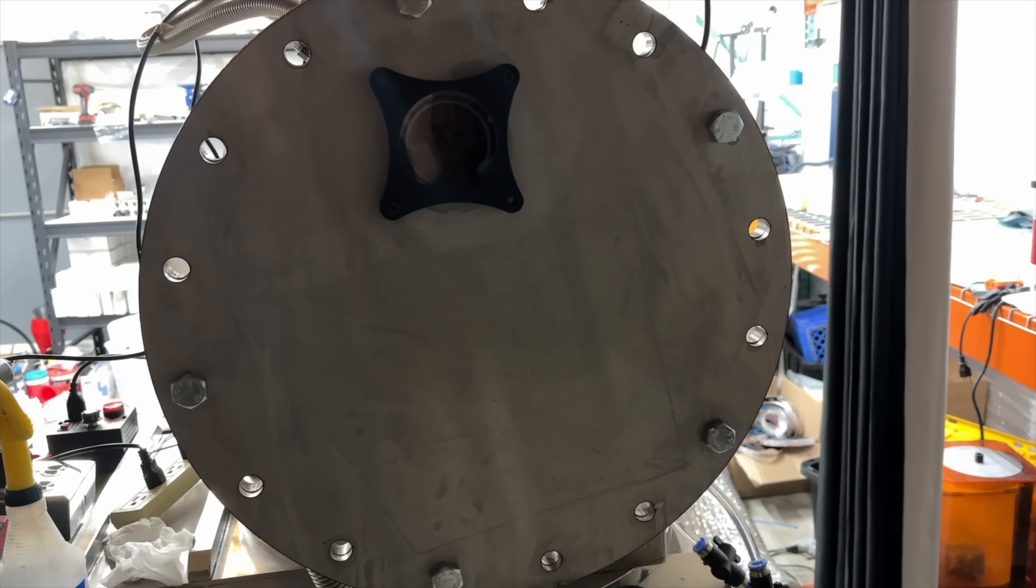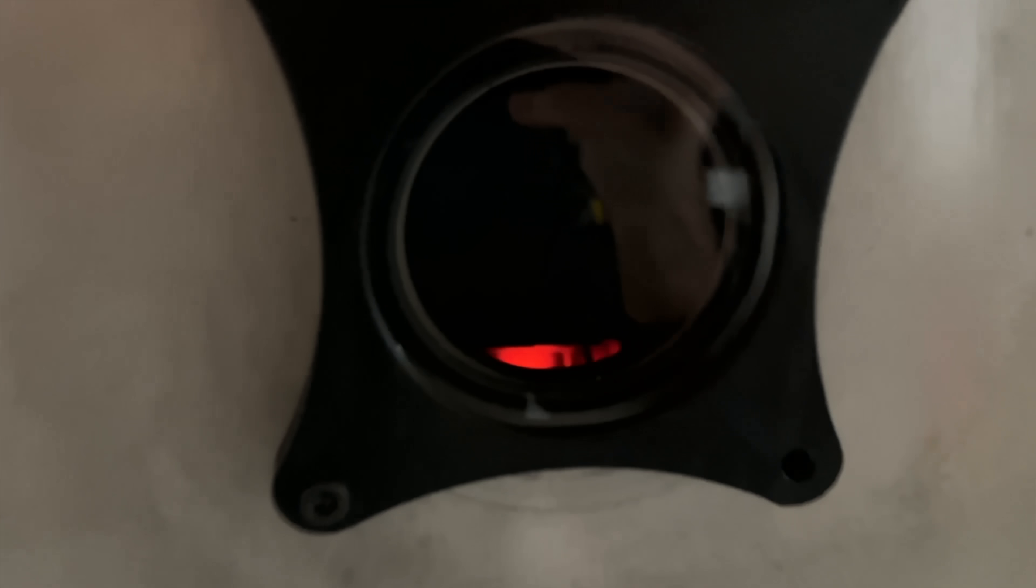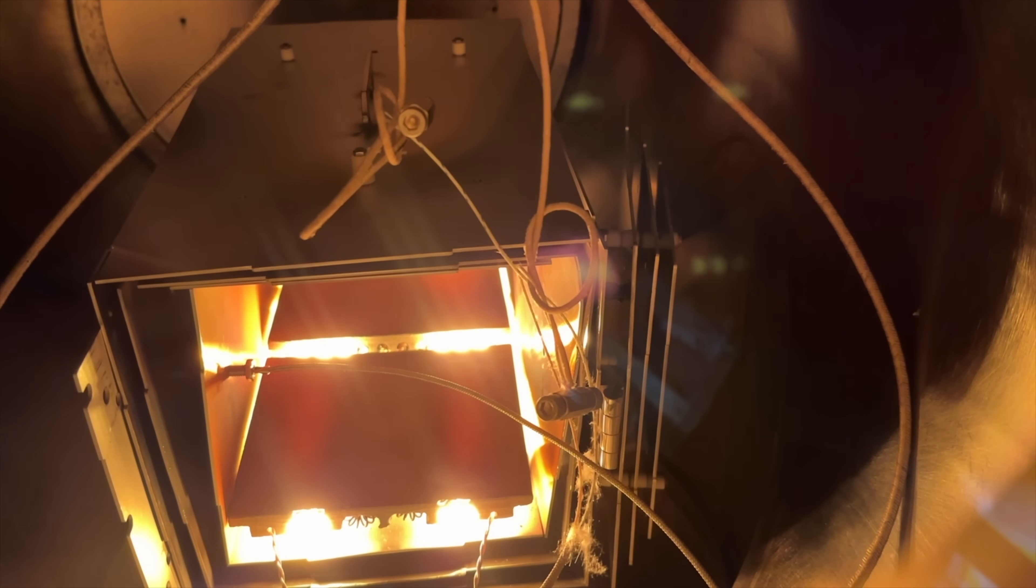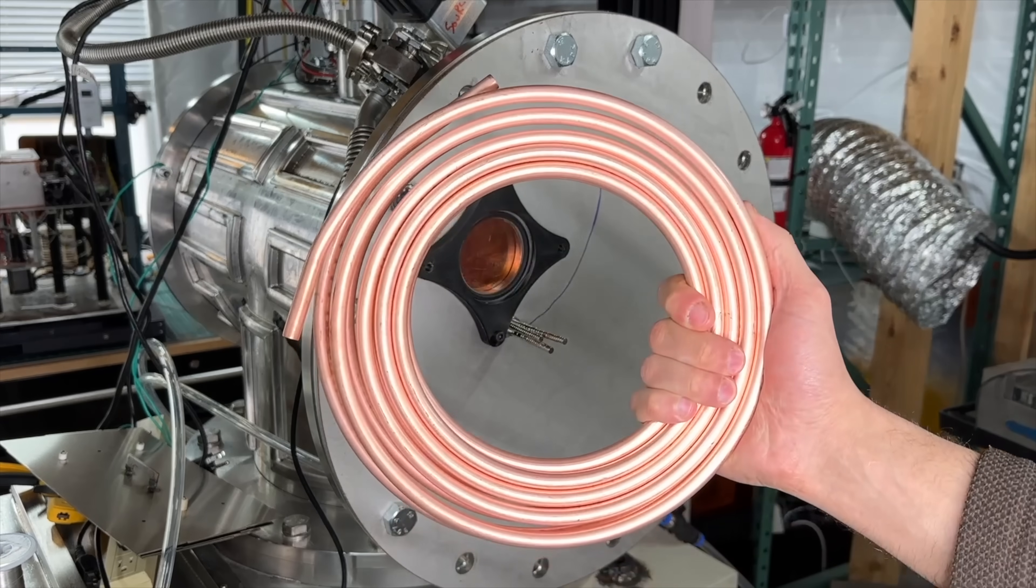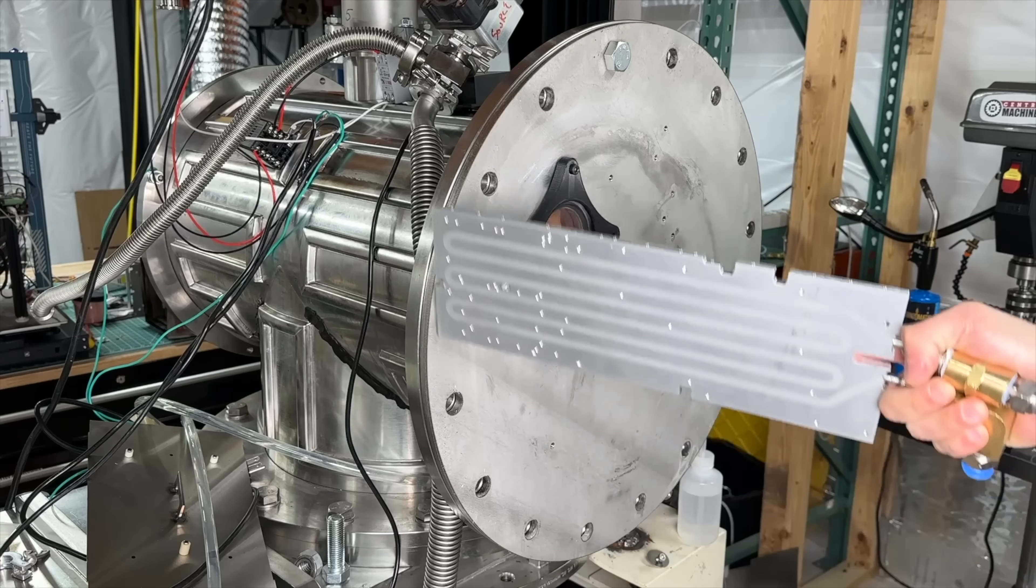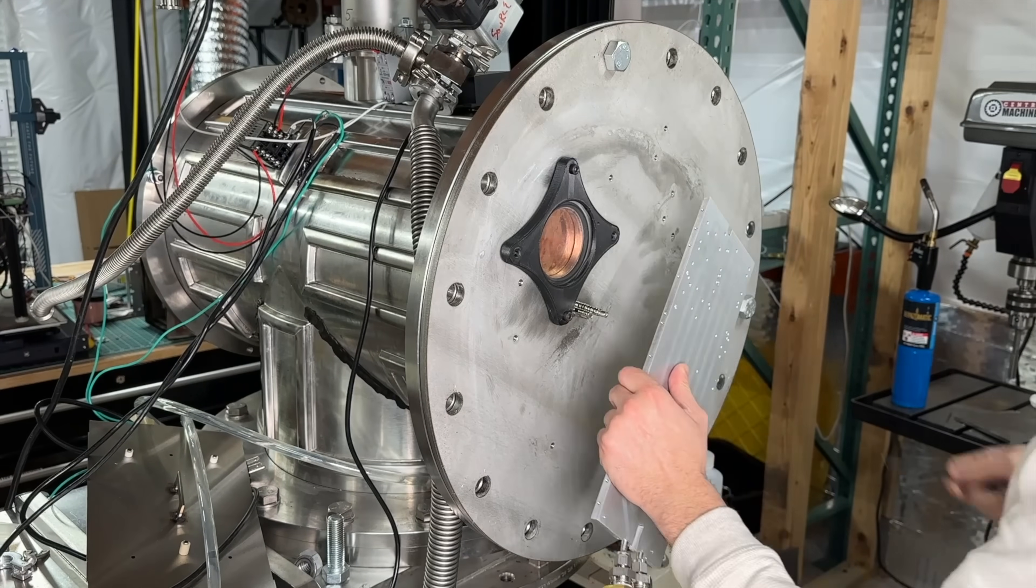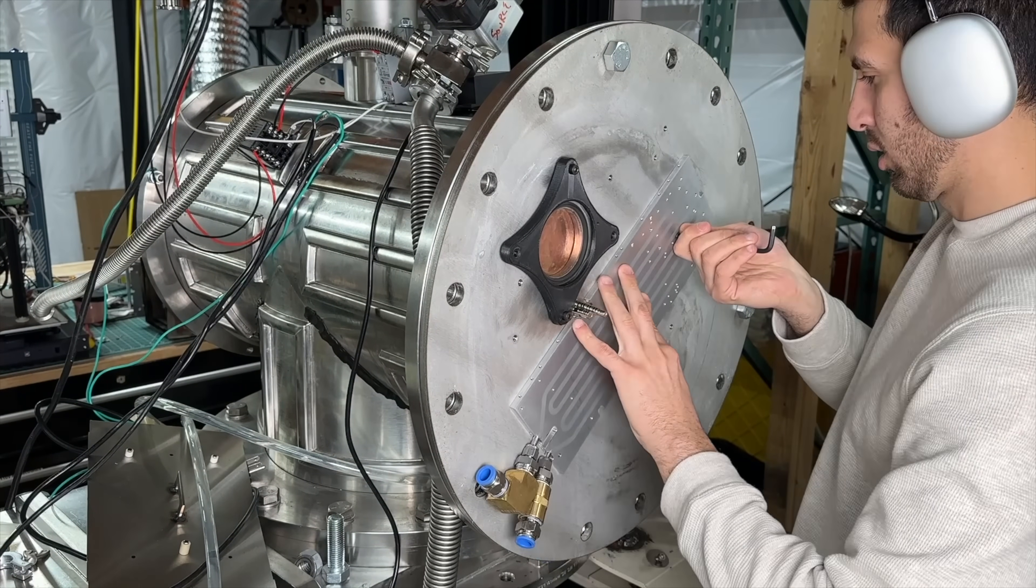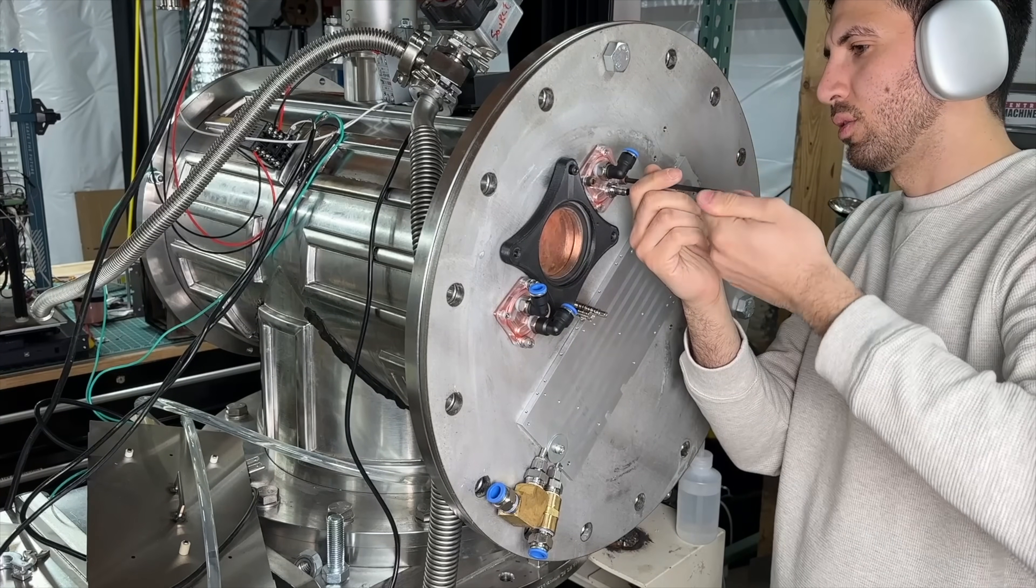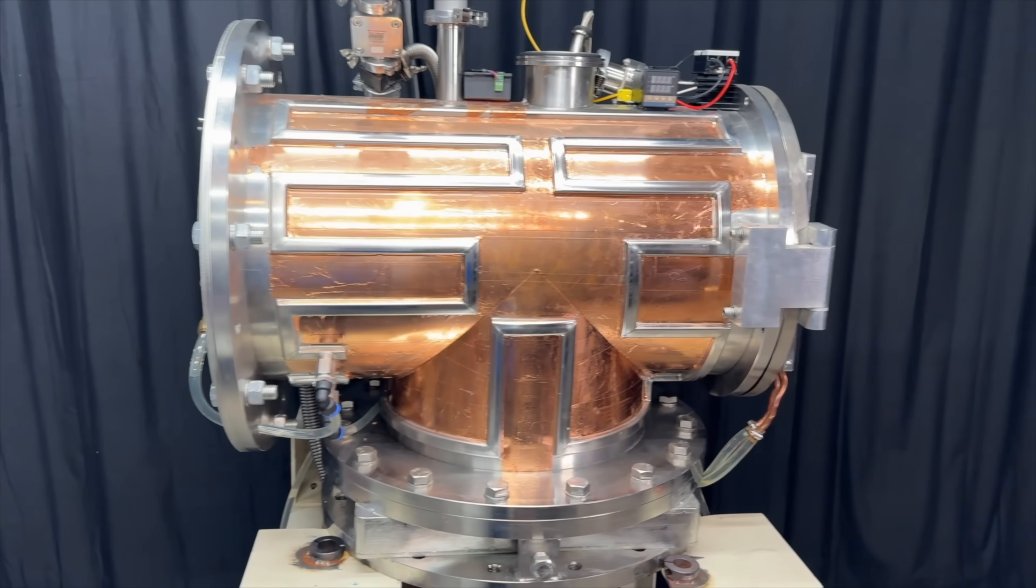Since quartz glass is so resistant to heat we can really crank up the temperature in here now. As you can imagine all of this excess heat really warms up the vacuum chamber so I was going to add some copper piping on the outside and run cold water through it but instead I opted for this cold plate which is essentially the same thing but with larger surface area and a few water cooled CPU blocks. And with that the vacuum furnace is done.